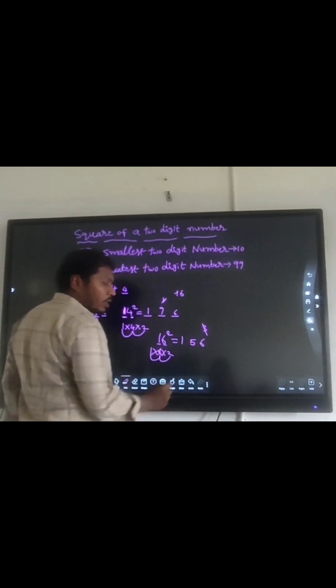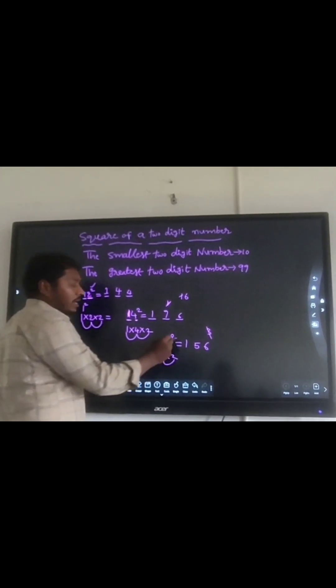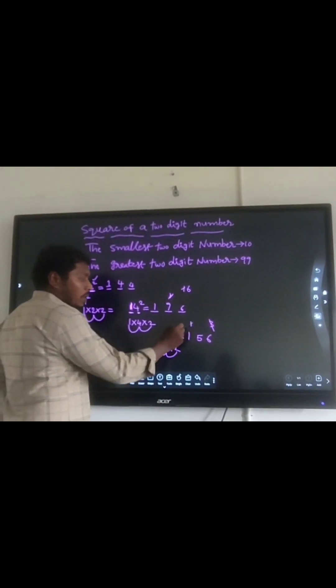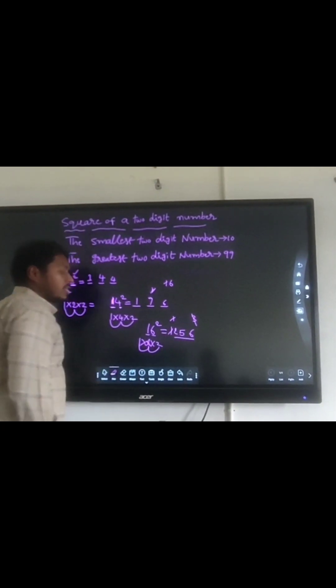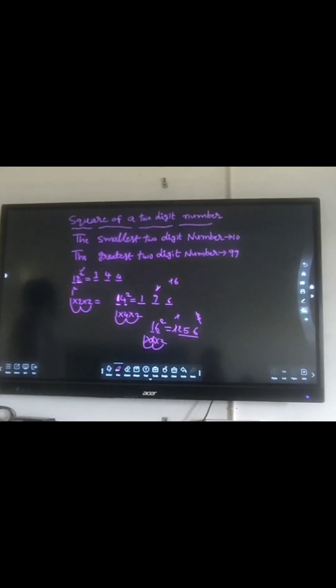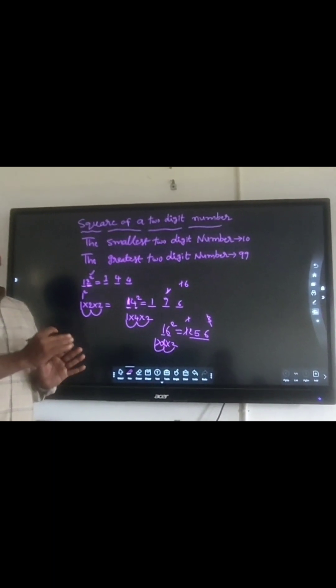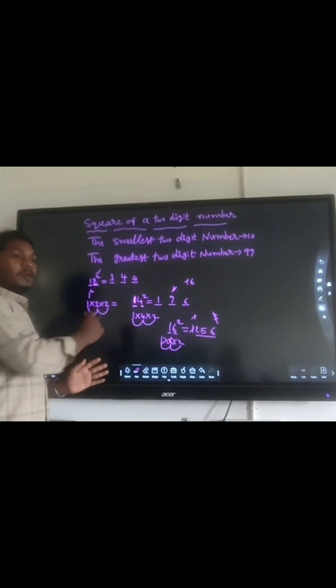15 is a 2-digit number, yes? So 1 is carried forward to the next place. 1 plus 1 is 2. So 256 is the answer. If the number is a 2-digit number, the tens digit is carried forward to the next place. That's it.